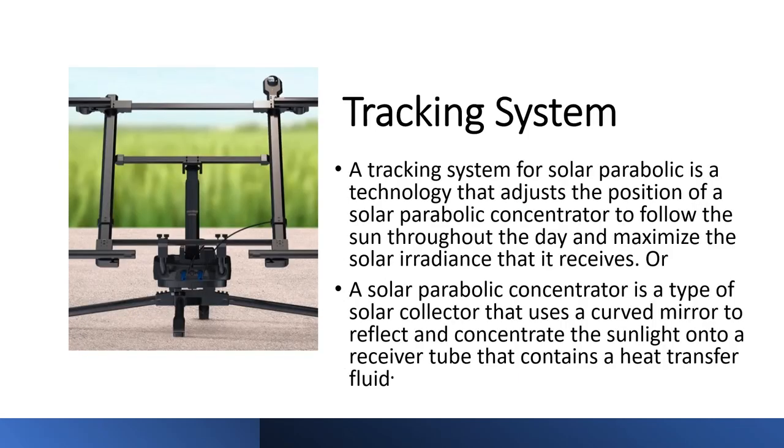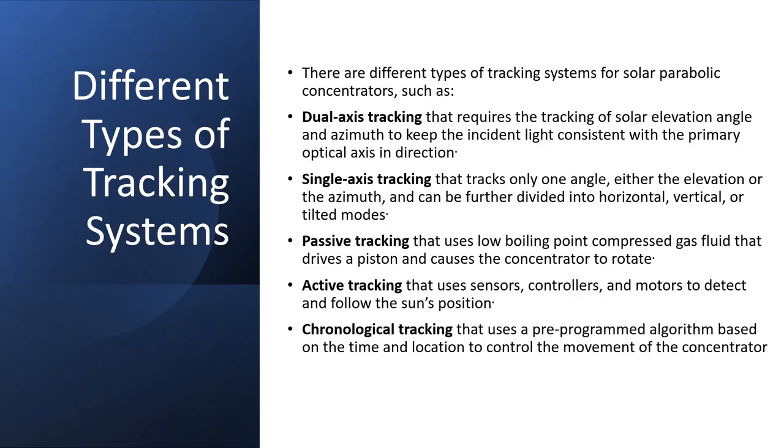A tracking system for solar parabolic is a technology that adjusts the position of a solar parabolic concentrator to follow the sun throughout the day and maximize the solar irradiance that it receives. Or, a solar parabolic concentrator is a type of solar collector that uses a curved mirror to reflect and concentrate the sunlight onto a receiver tube that contains a heat transfer fluid. There are different types of tracking systems for solar parabolic concentrators.